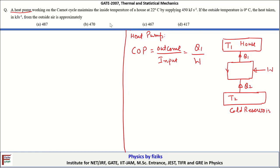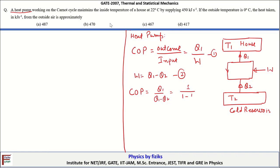The objectives for a heat pump and a refrigerator are totally different. We know that W equals Q1 minus Q2. Using these relations, the coefficient of performance for the heat pump can be written as Q1 divided by (Q1 minus Q2), which equals T1 divided by (T1 minus T2).